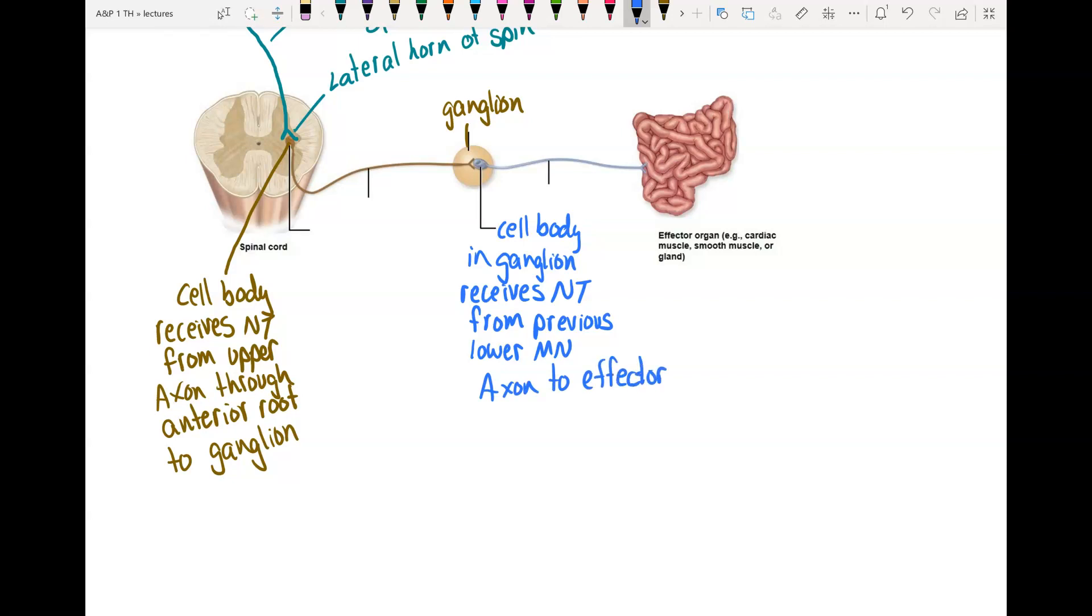And then its axon goes to the effector. And since this is autonomic, the effector is either going to be cardiac muscle, smooth muscle, or a gland.